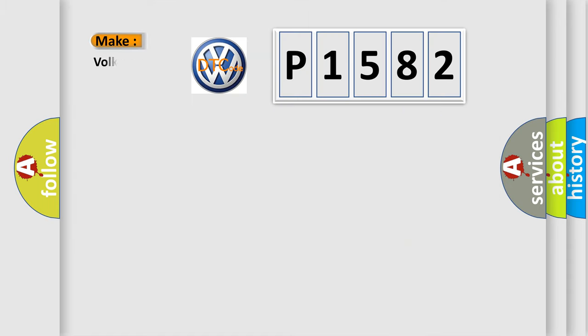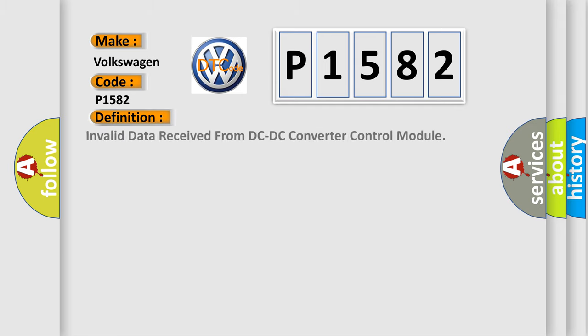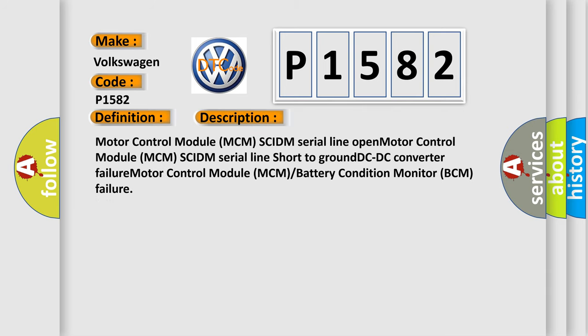What does the diagnostic trouble code P1582 interpret specifically for Volkswagen? The basic definition is: Invalid data received from DC-DC converter control module. This DTC is associated with: Motor control module (MCM) SCIDM serial line open, motor control module MCM SCIDM serial line short to ground, DC-DC converter failure, and motor control module MCM battery condition monitor (BCM) failure.